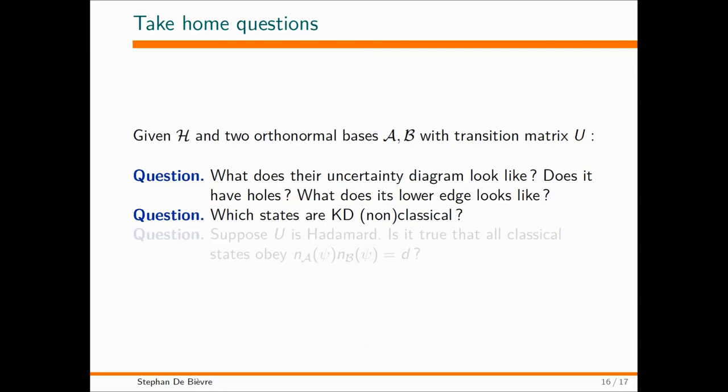We've seen some examples when this thing can have holes in it, and the lower edge is not necessarily simple. It may have a very jagged form. So if you take a high dimension, it may look funny. This is not such an easy question. I solved it in some cases, but it's in general not an easy question. And then the next question is, once you have figured out what this uncertainty diagram looks like, and if you're still interested, you can say, what about non-classicality? Which states are non-classical? And then you can say, I'm only interested in Hadamard matrices. So then I have a little more information. Is it true that all classical states obey this? So I think I can wrap it up there. Thank you.